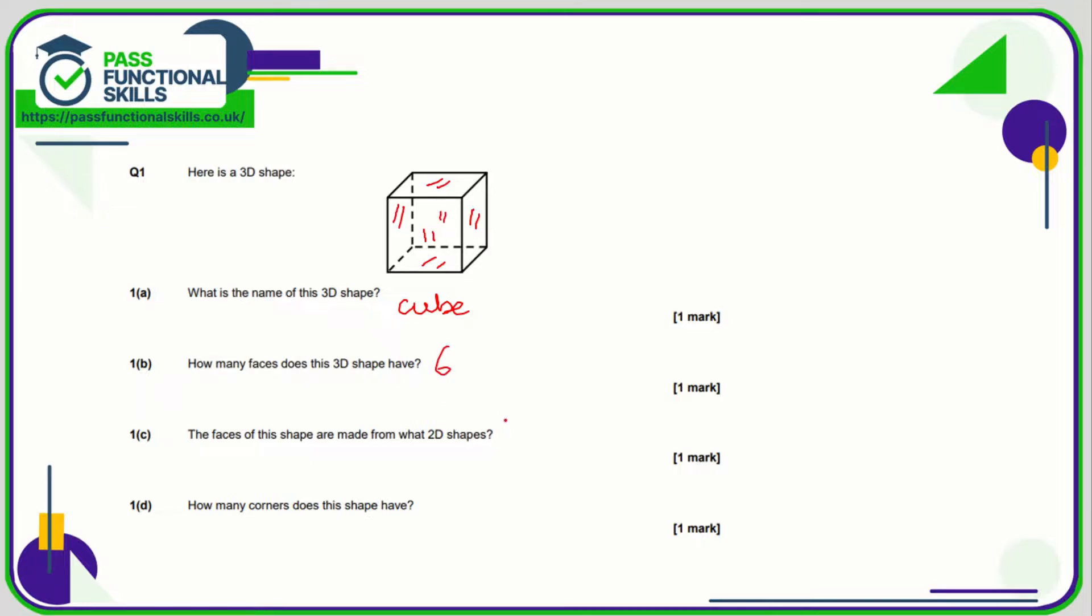The faces are made from squares. And how many corners does it have? Well, one, two, three, four at the front and another one, two, three, four at the back, so that is eight in total.